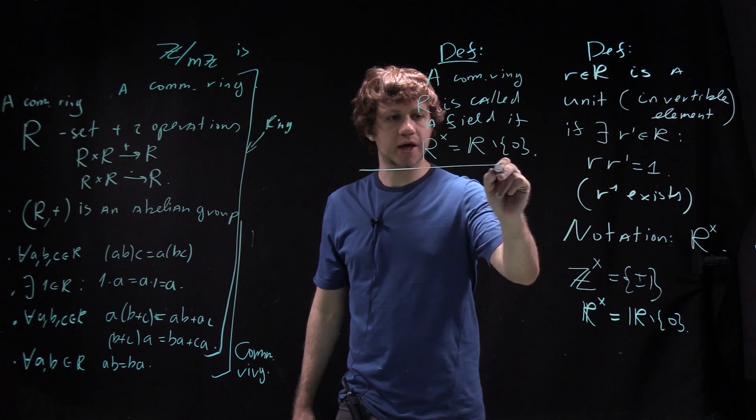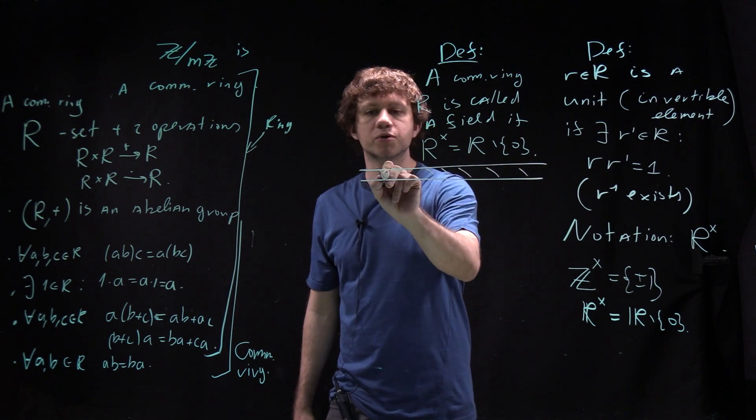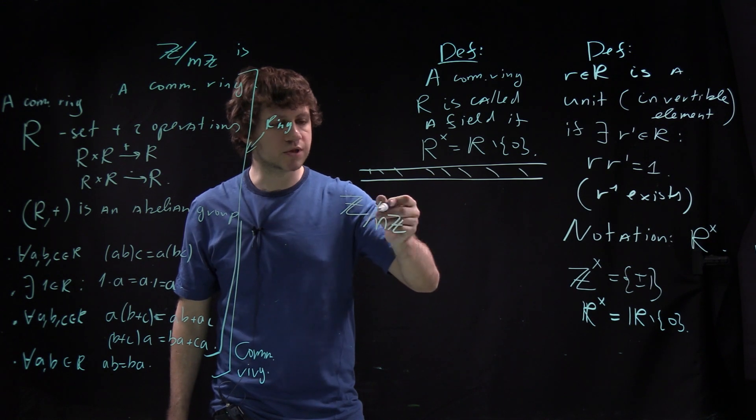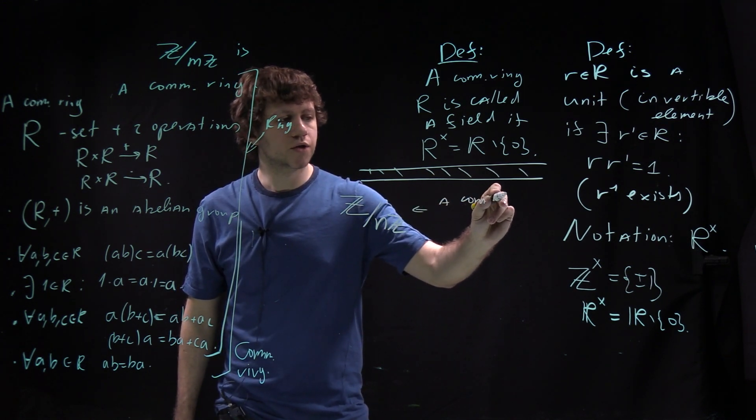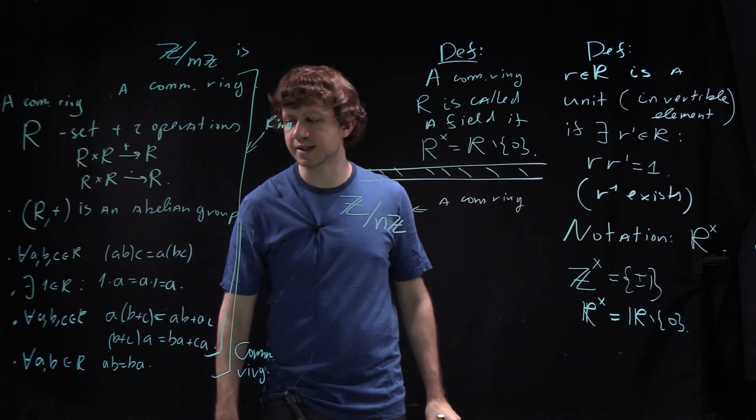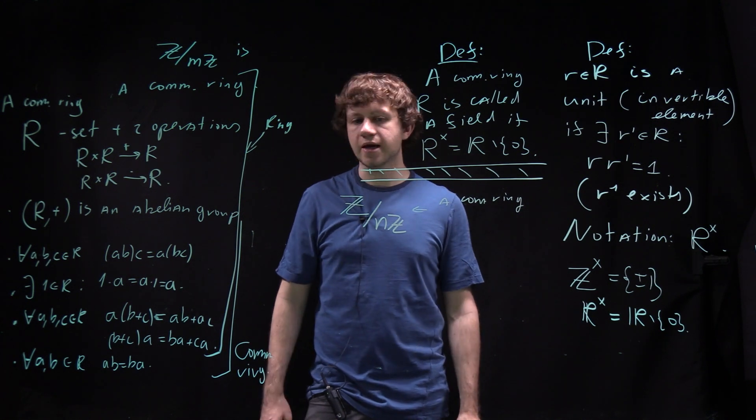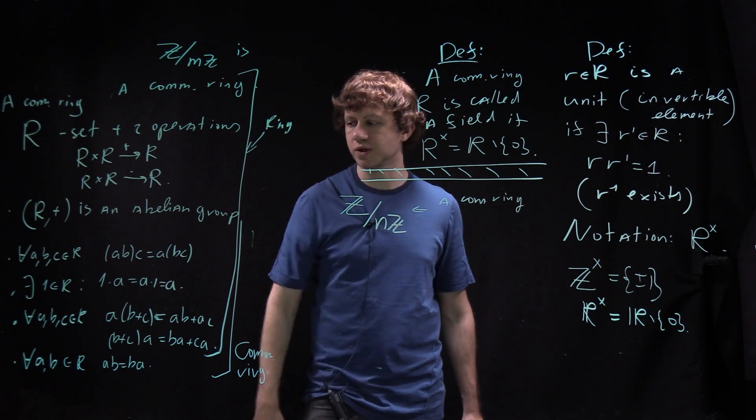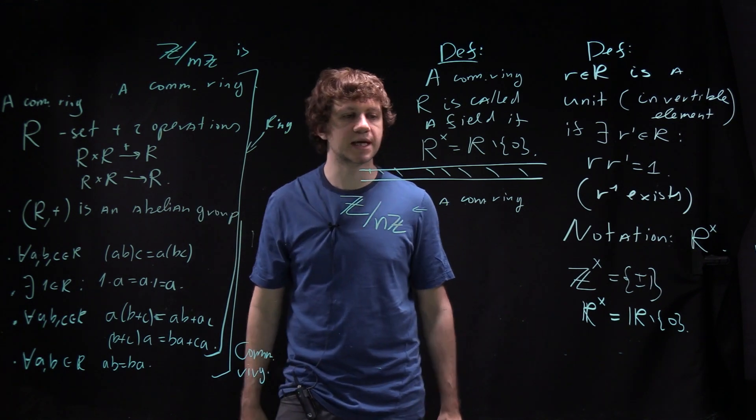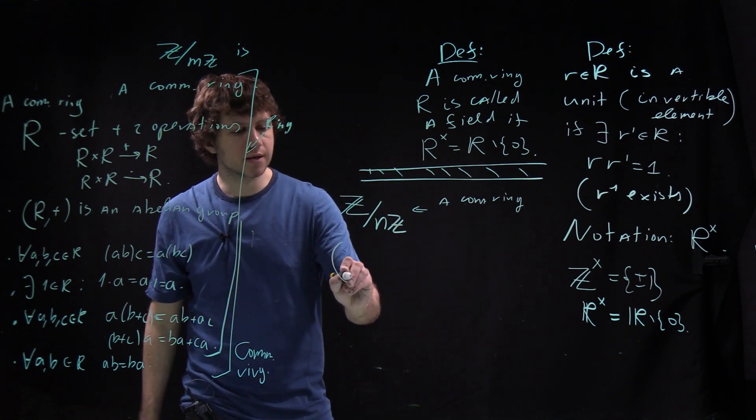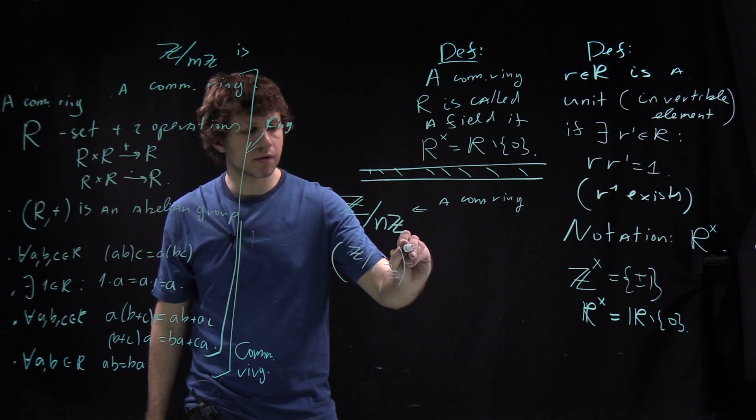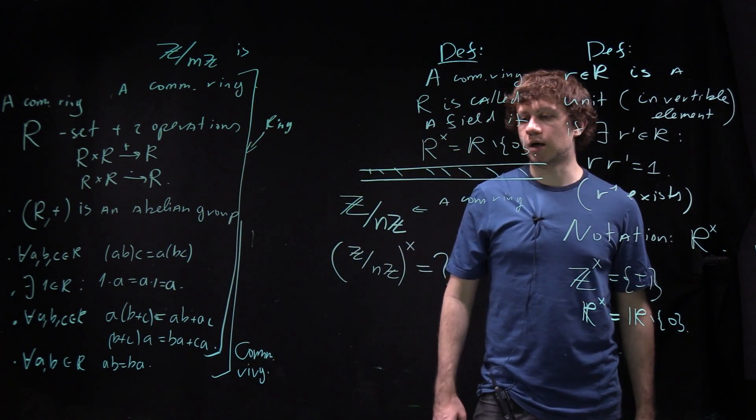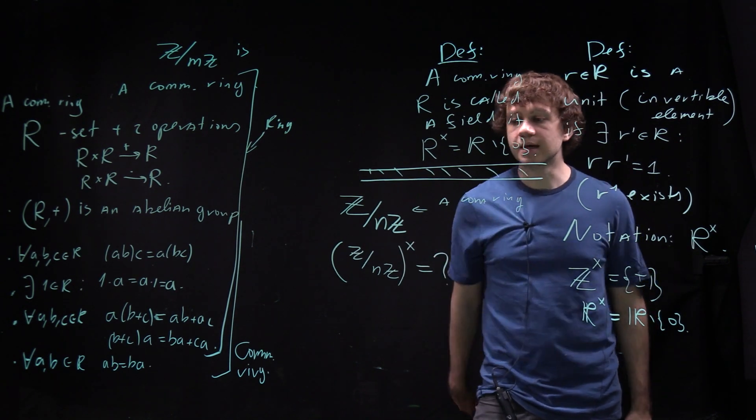Next question is why we talk about all that right now. Obviously because I want to discuss Z over NZ from this perspective. Z over NZ is a commutative ring. If you know that addition and multiplication are well defined for classes, you can open these class brackets and use the usual properties of integers. So what is Z over NZ units?